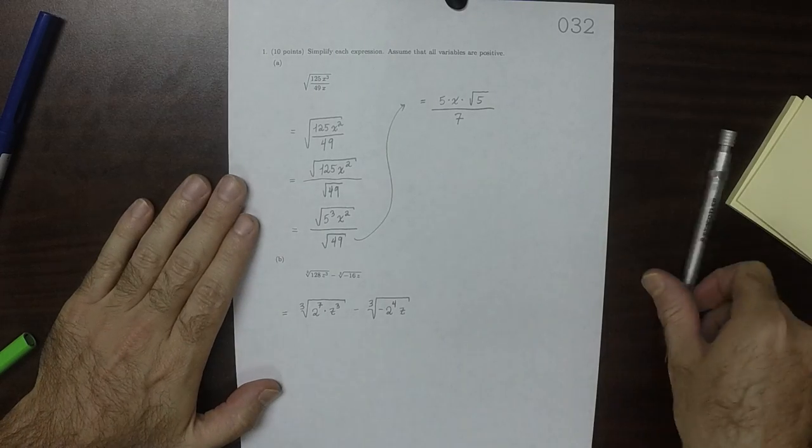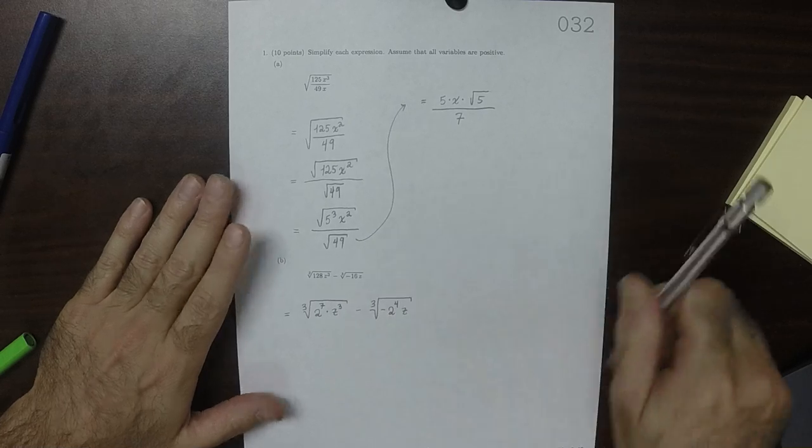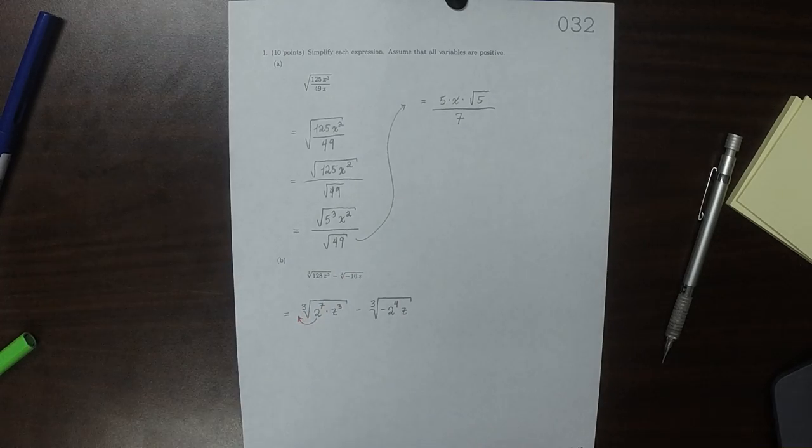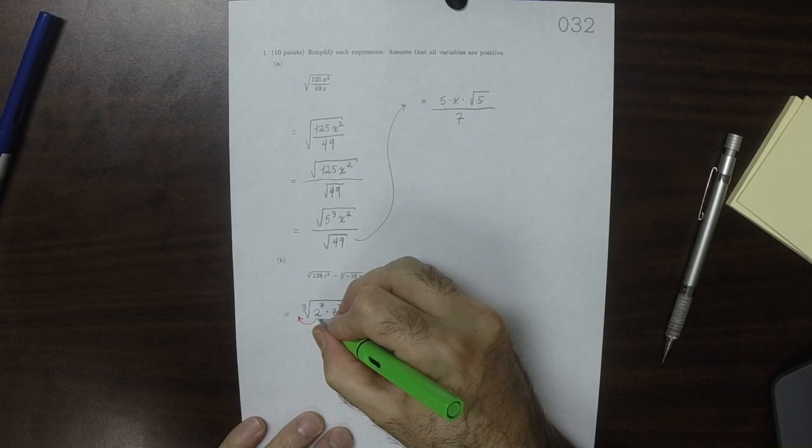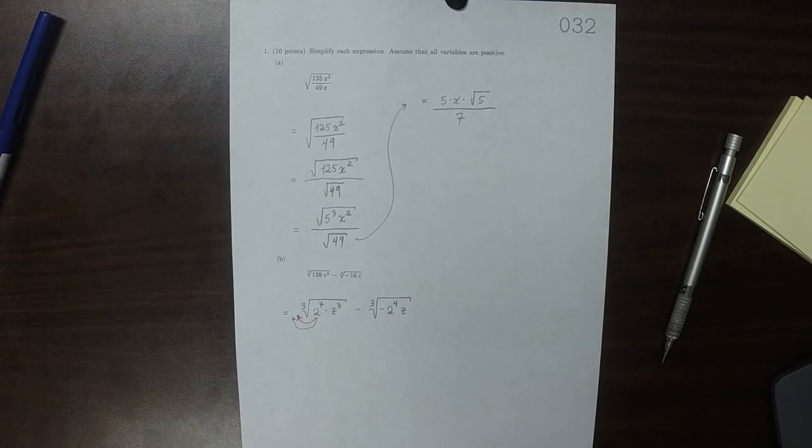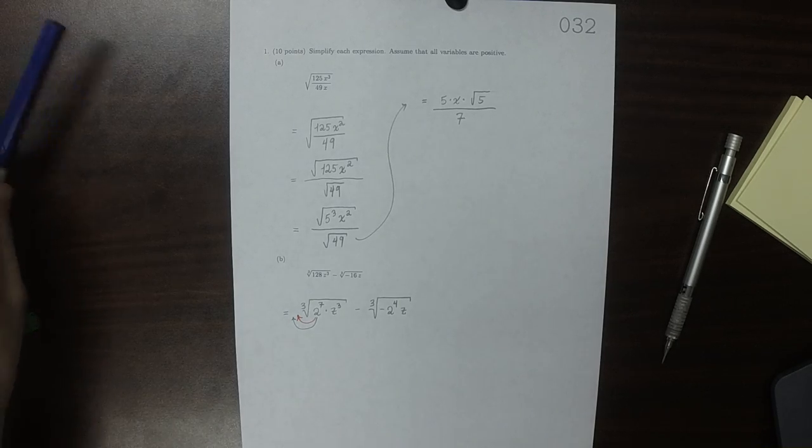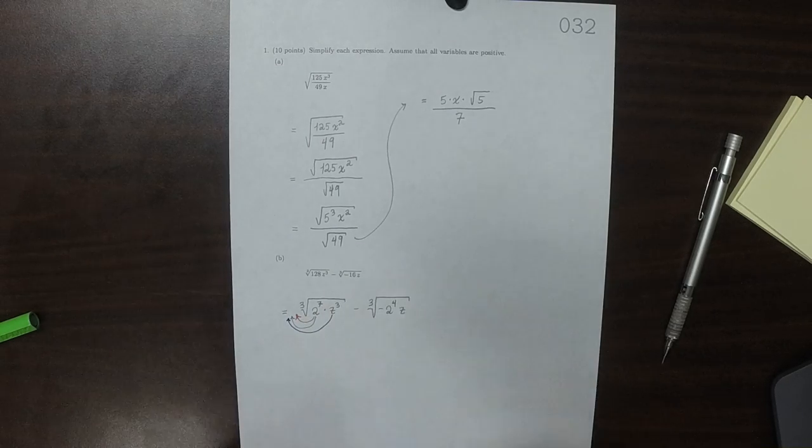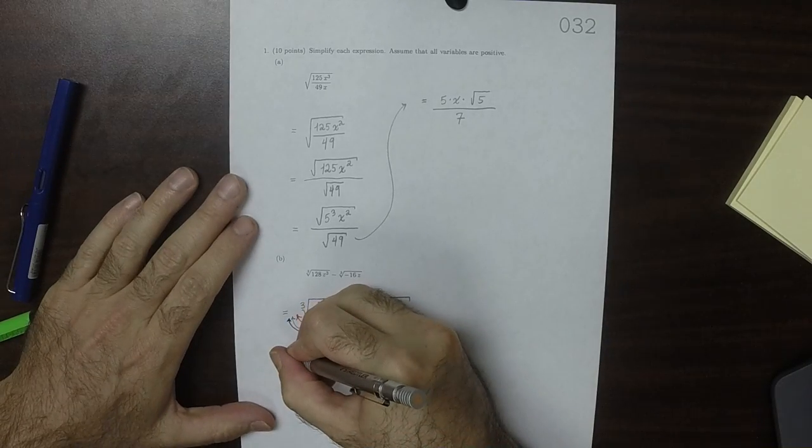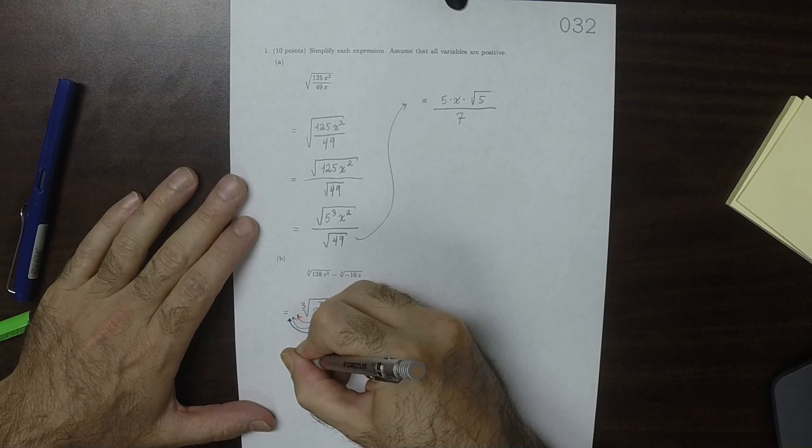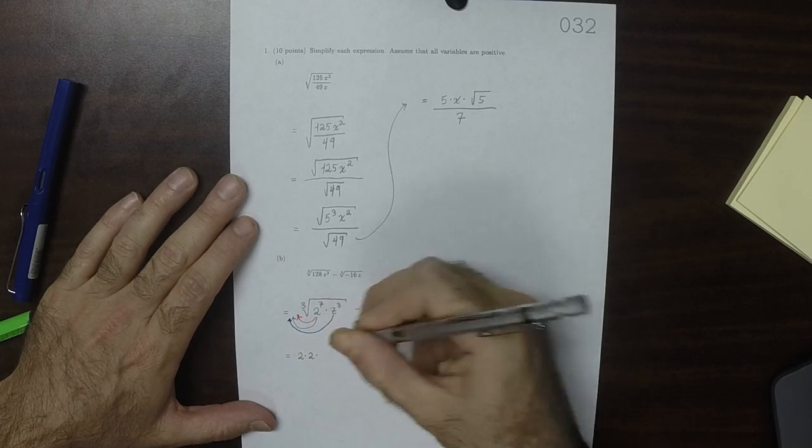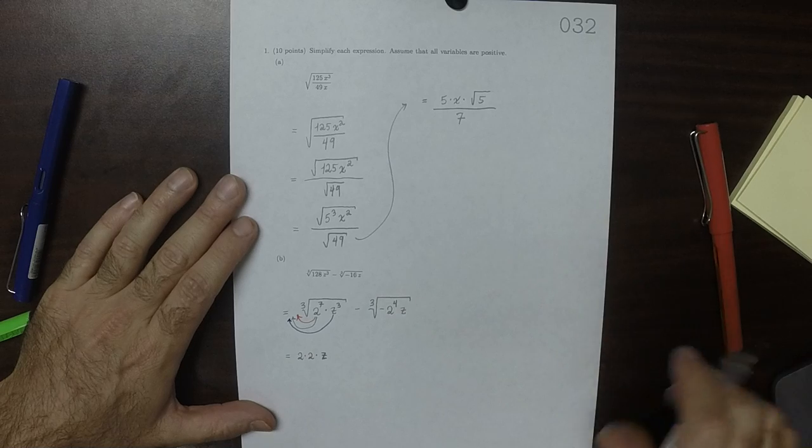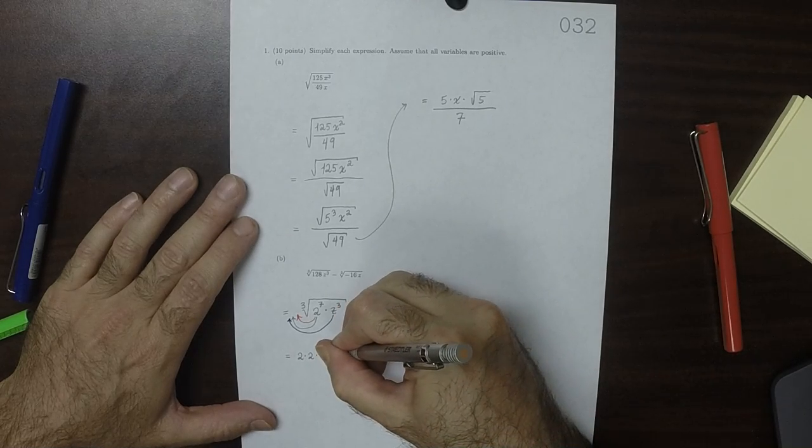So we can take these 2's out three at a time, so we're going to take a 2 out, we're going to take 3 of them out, and then we're going to take another three of them out, because there's 7, and then we'll take all three of these z's out as well. So that would be 2 multiplied by 2 multiplied by z, that's what was able to come out, and a 2 was left inside.